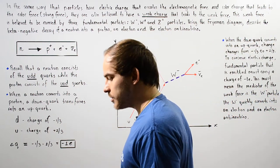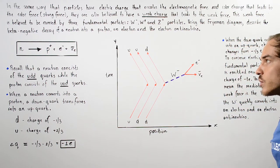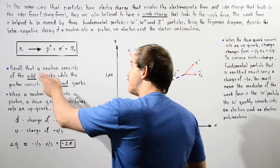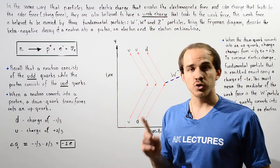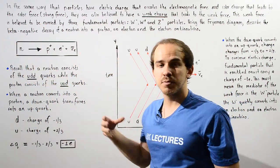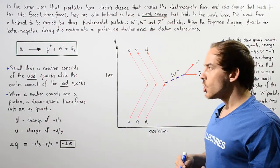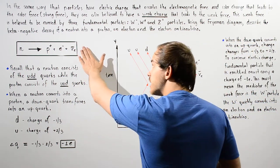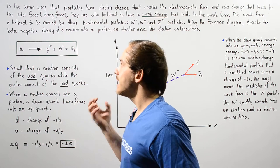Using this information, we want to draw the Feynman diagram for the beta negative decay of a neutron that decays into a proton, an electron, as well as the electron anti-neutrino, knowing that this particle decay takes place as a result of weak nuclear forces. Before we draw and examine the Feynman diagram that describes this particle decay, let's discuss what takes place inside our neutron.